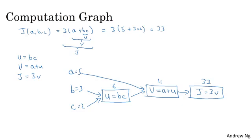So the computation graph comes in handy when there is some distinguished or some special output variable, such as j in this case, that you want to optimize. And in the case of a logistic regression, j is, of course, the cost function that we're trying to minimize.